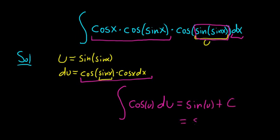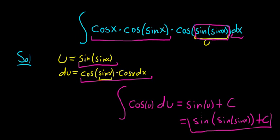And the last step is to replace u with what it is. So this is sine of, and u is the sine of the sine of x. So sine of sine of x, parentheses, parentheses, plus our constant of integration, c.